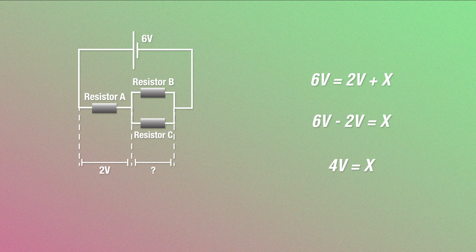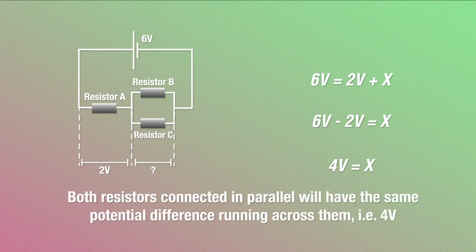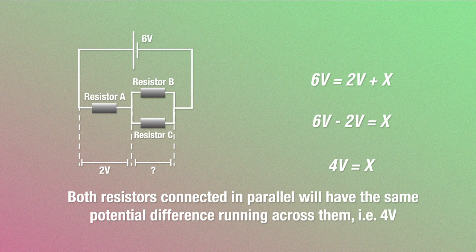What about the individual resistors? Well, again, in parallel connections, charge carriers can either pass through resistor B or C, right? And again, regardless of which one they go through, they'll still deliver the same amount of energy. So the potential difference across either resistor, B or C, will be the same 4 volts.